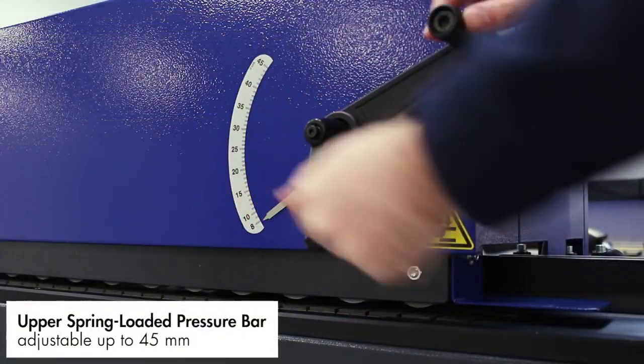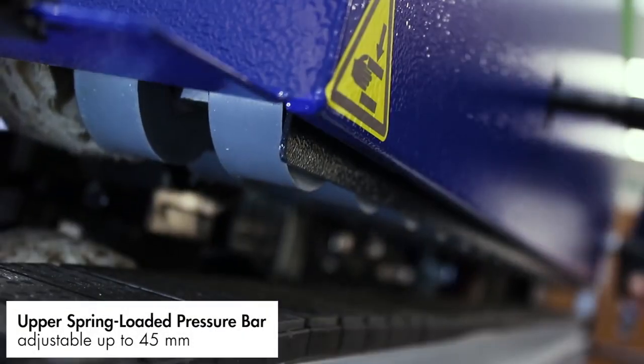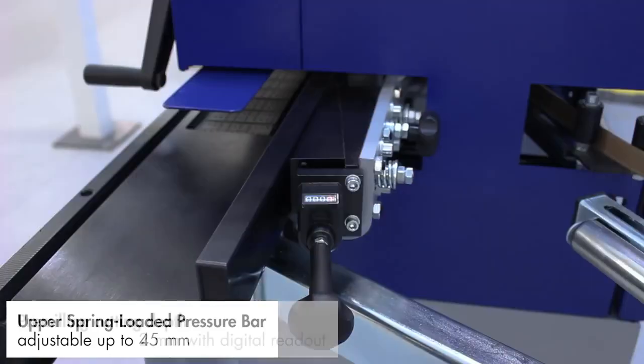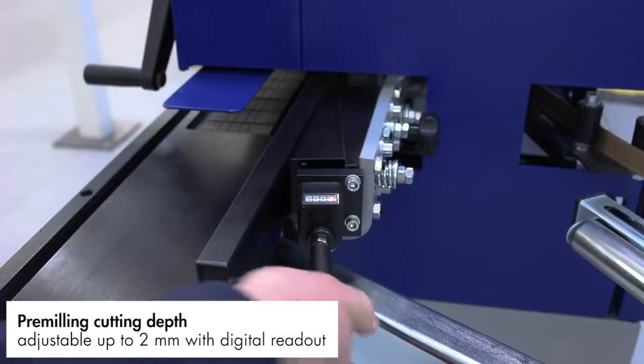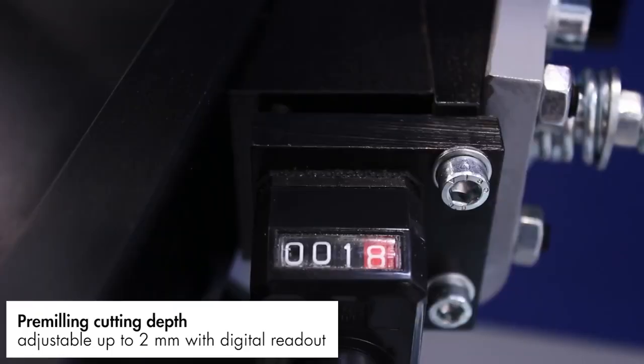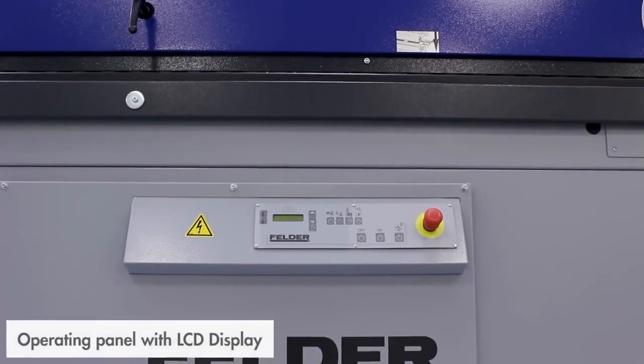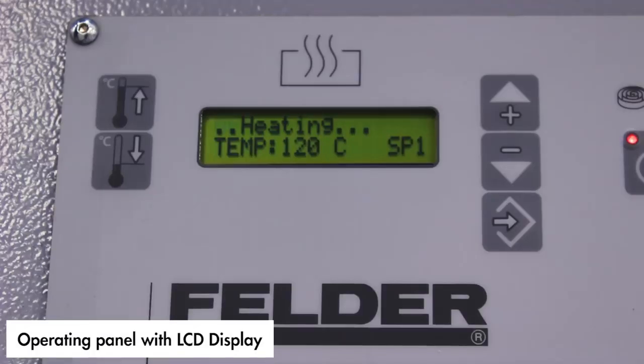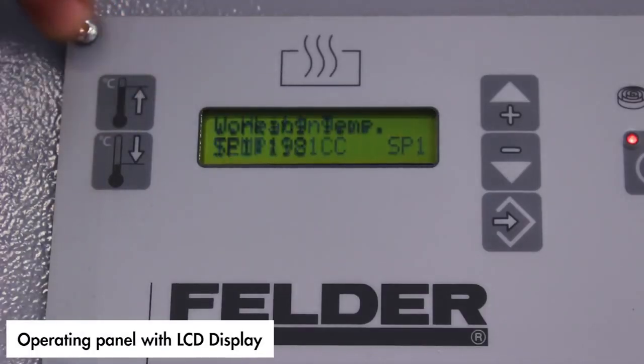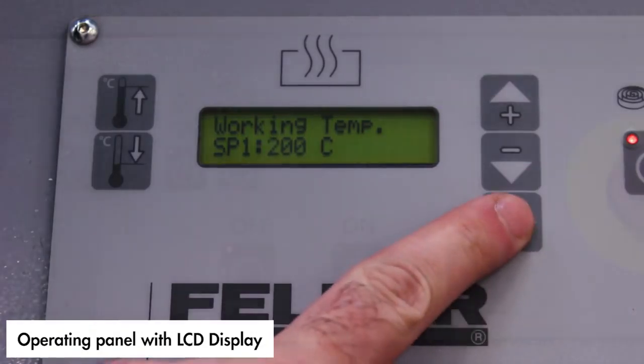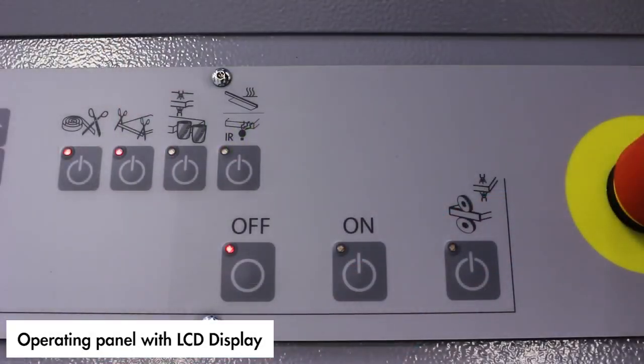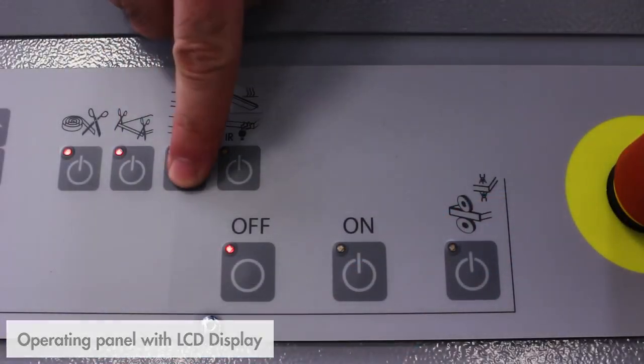The G360 has a handle to adjust the upper pressure bar up to 45mm, and adjustment of the pre-milling depth up to 2mm with digital readout. At the front of the machine is the operating panel with LCD display. From here, glue temperature can be set, as well as clearly laid out controls for engaging or disengaging each unit as required. Further information regarding the machine's status can also be accessed from this panel.